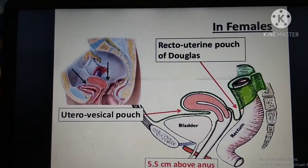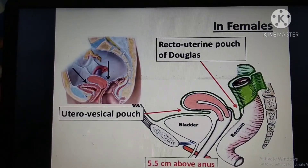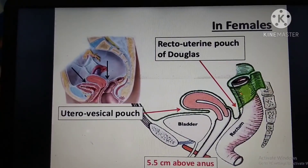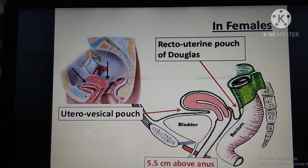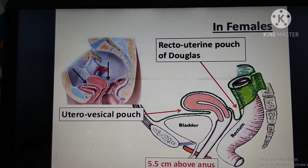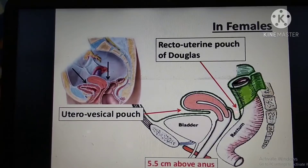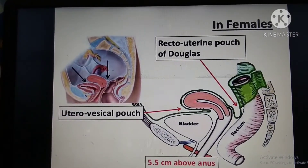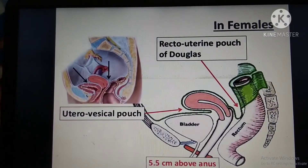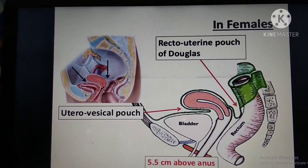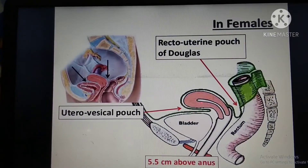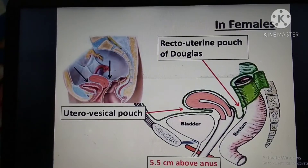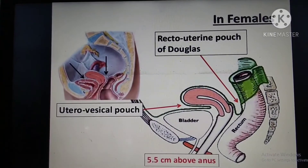The pouch of Douglas, also called the recto-uterine pouch, is located between the rectum and uterus. In front of this is another pouch called the utero-vesical pouch — 'vesical' referring to the urinary bladder and 'utero' referring to the uterus — situated between those two viscera.